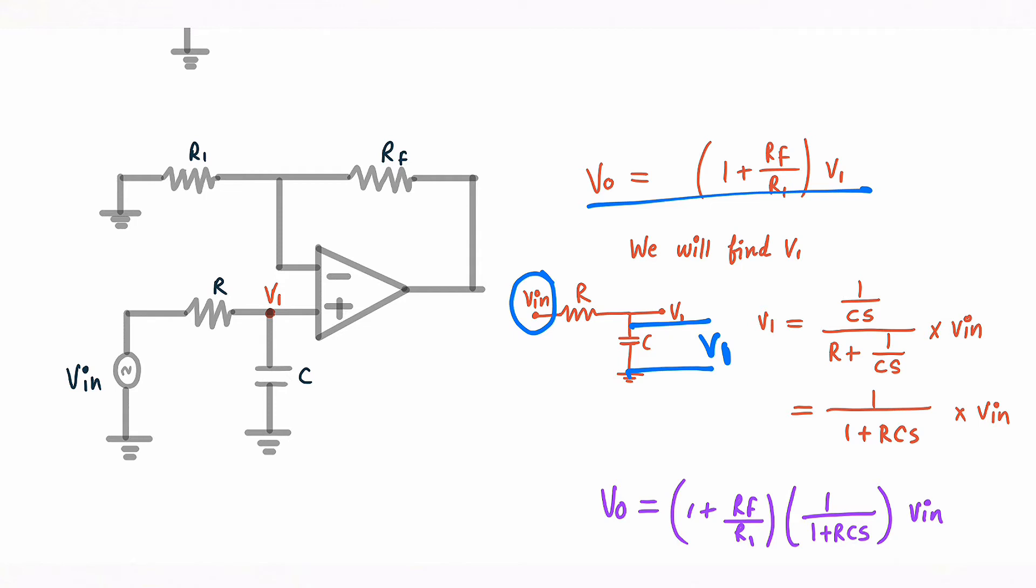Now I got value of V1, I will just substitute this value in my this equation. So my Vo equation will be 1 plus Rf upon R1 which was passband gain of non-inverting amplifier, and now we find out V1, that is this equation we will just substitute.